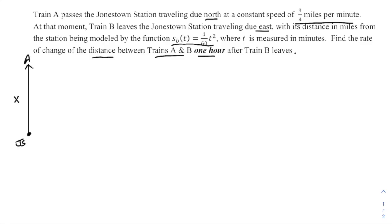You could call it lowercase a if you like, but that three-fourths of a mile per minute is the rate of change of that distance. So now I've labeled it as x. I can call this dx/dt = 3/4. Now Train B leaving that same station but traveling due east.